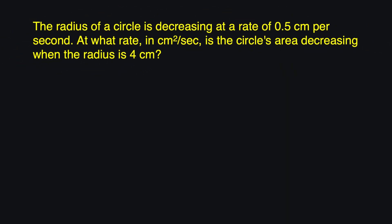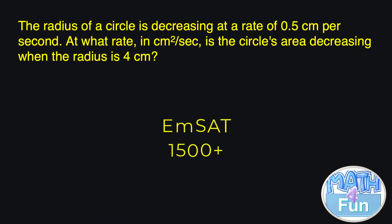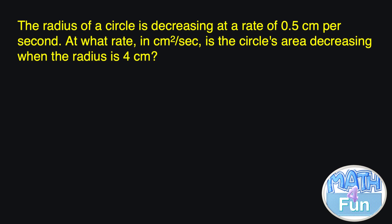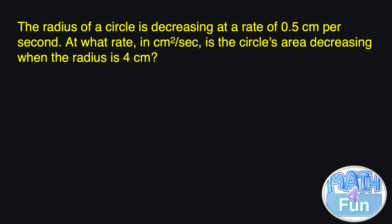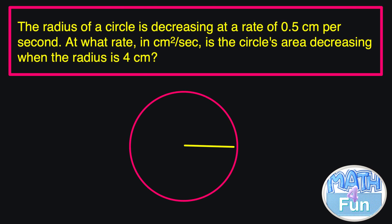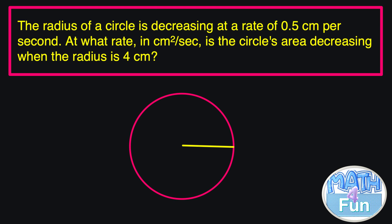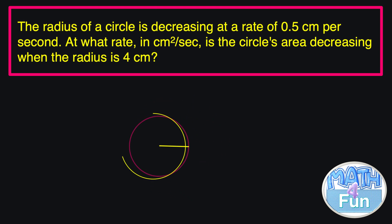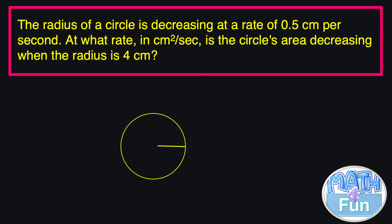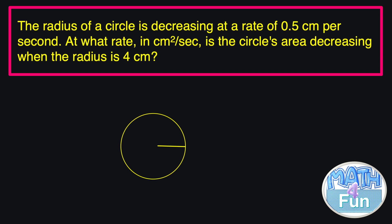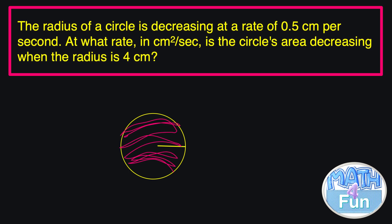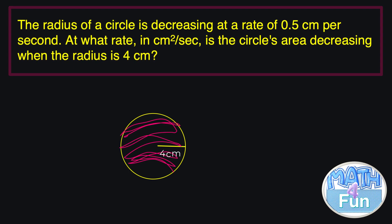Do you want to see 1,500 plus questions in the AMSAT exam? Let me show you this. They say here the radius of a circle is decreasing at a rate of 0.5 cm per second. At what rate in cm² per second is the circle's area decreasing when the radius is 4 cm?